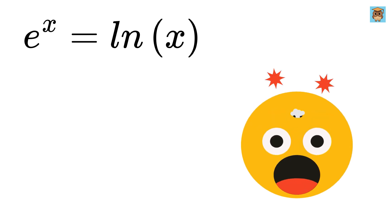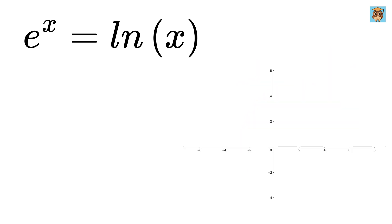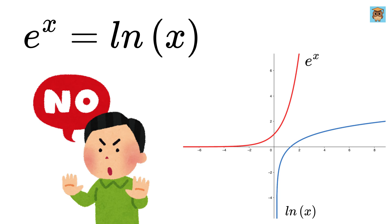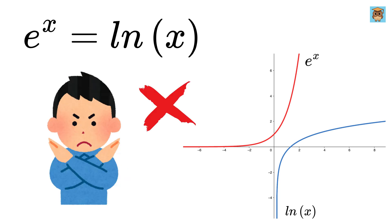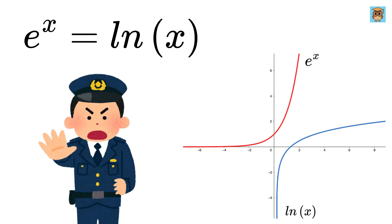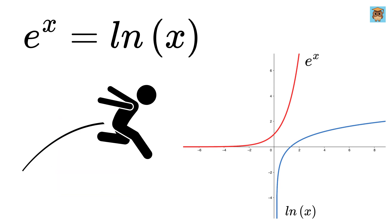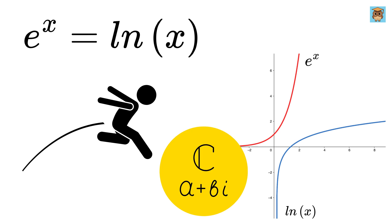First of all, let me give you all a shocker. Let us plot e to the x on a graph, and then plot the natural log of x on the same graph. These two graphs never meet each other. This means we do not have any solution for x. But wait — we do have a solution for x, but not in the real world. We will have to jump to the imaginary world.